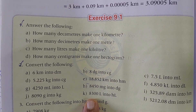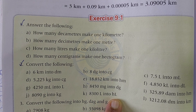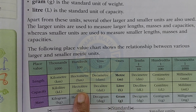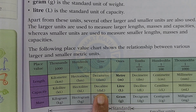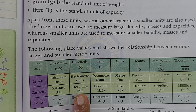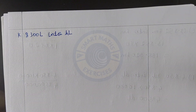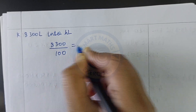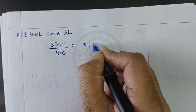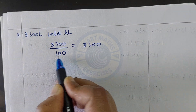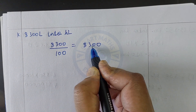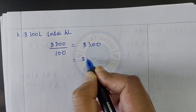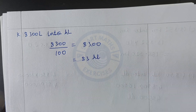Convert 8300 liters into hectoliters. From liter to decaliter is 10, decaliter to hectoliter is 100. Divide 8300 by 100. Count two zeros, place decimal after two digits, then omit trailing zeros: the answer is 83 hectoliters.